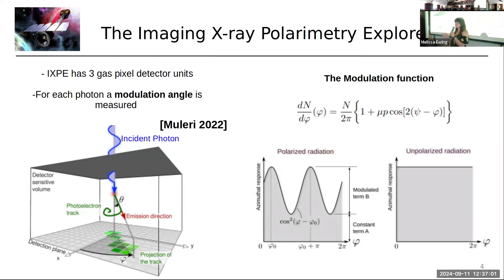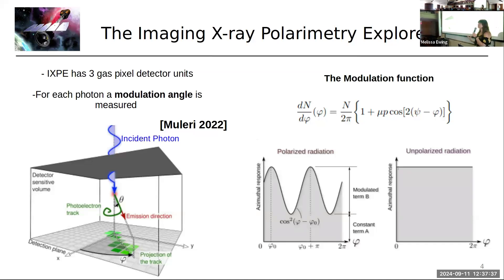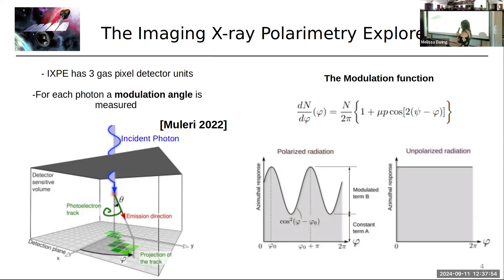When a photon is incident on one of IXPE's detectors, it enters a volume of helium and produces a photoelectron. The direction of this photoelectron encodes the polarization information of the observation. If we build up a histogram of these modulation angles, we find it's proportional to a modulation function. For a polarized source, this function has a cos-squared shape: the height corresponds to the polarization degree and the position on the modulation angle axis corresponds to the polarization angle. A completely unpolarized source produces a flat response with no dependence on modulation angle.